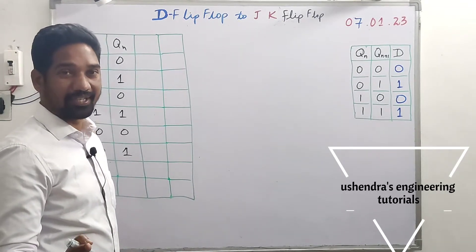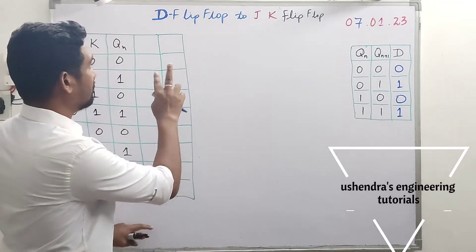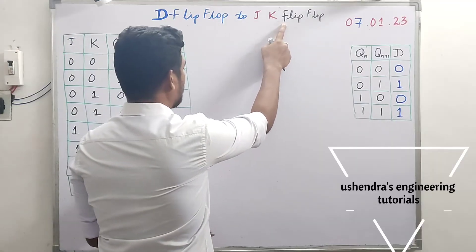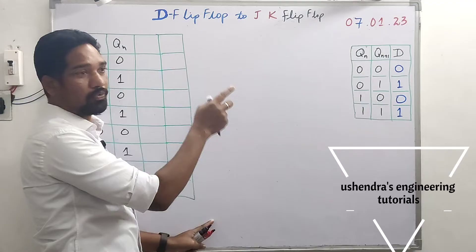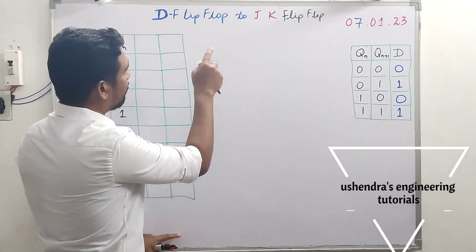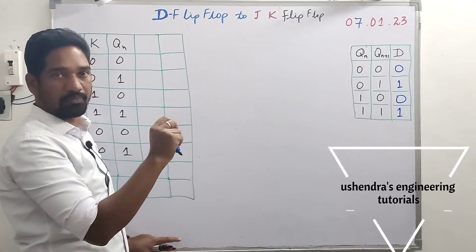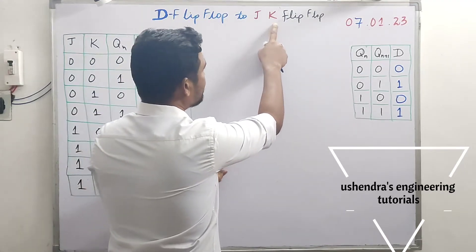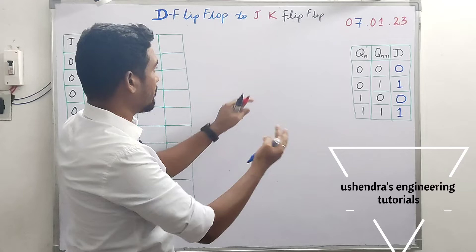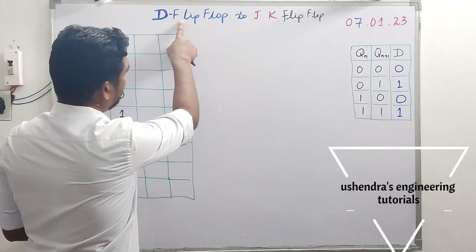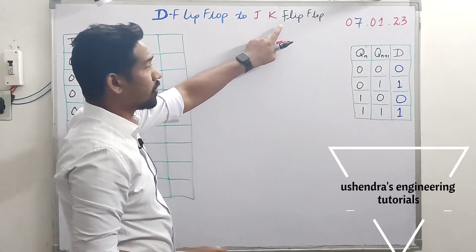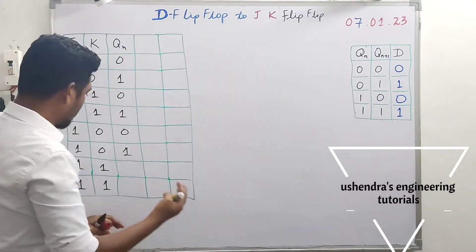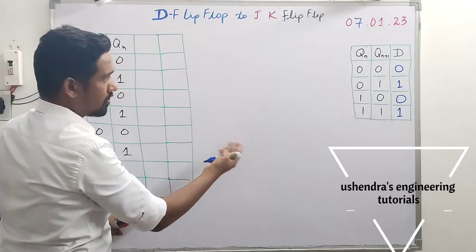In digital electronics and flip-flop conversions, an important conversion is D flip-flop to JK flip-flop. We need to identify which flip-flop is available and which is the destination flip-flop to be converted. Here, D flip-flop is available and JK flip-flop is the destination. Since we're converting a single-input flip-flop to a two-input flip-flop, a combinational circuit comes in between, made up of logic gates.